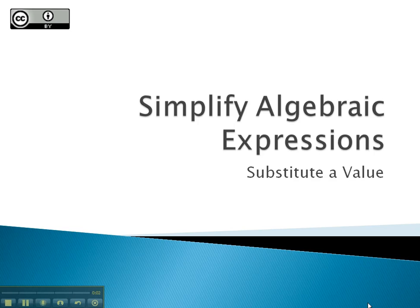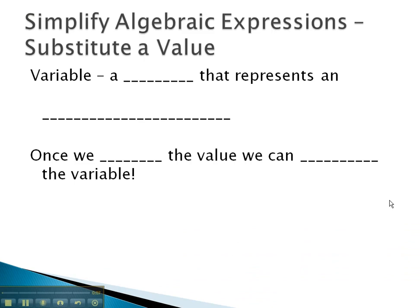In this video, we're going to begin simplifying algebraic expressions by using a process called substituting a value. But first, I want to talk about what this thing is called a variable. A variable is simply a letter that we will use that represents some unknown number. It's almost a fill in the blank. What is this mysterious number? The nice part about that is, once we know the value that that letter is representing, we can replace the variable with that number.